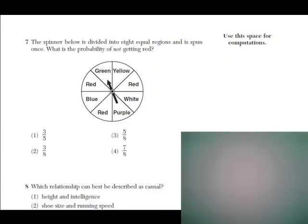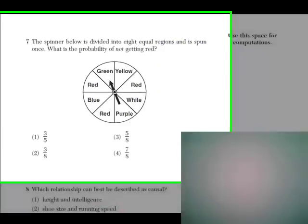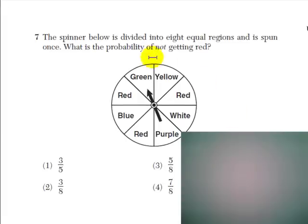Problem 7 says the spinner below is divided into 8 equal regions and is spun once. What is the probability of not getting red? And 'not' is italicized.